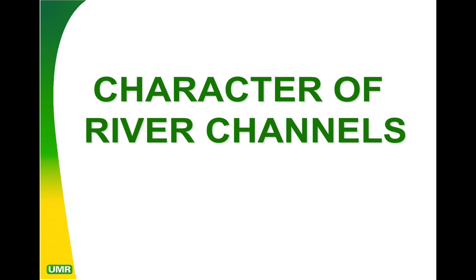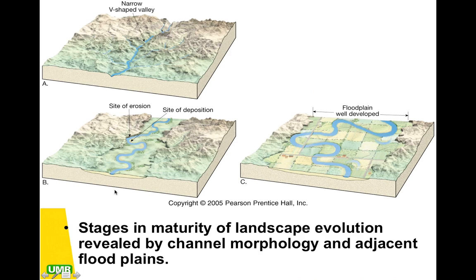Our next thing to address in our lab is going to be the different characteristics of a river and a river channel. There are many different stages of a river. Water takes its easiest path and goes wherever it's lowest. Water wants to find the lowest spot — if your basement has ever filled up with water, it's always going to pool in the lowest spots first. That's true for a river flowing down from a high spot to a low spot as well.